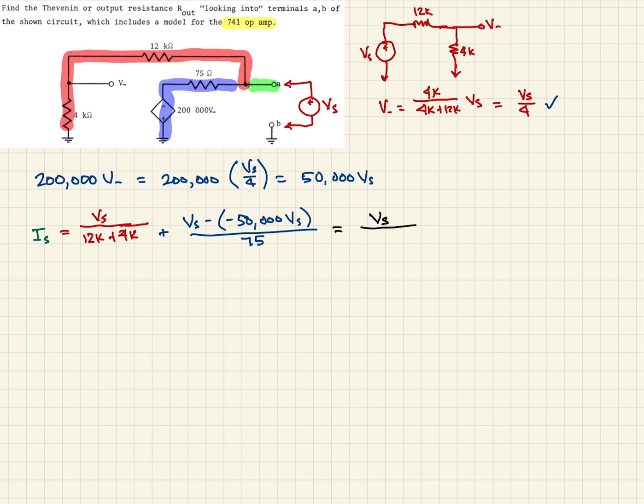So we'll have VS over 16,000 ohms. And that's going to be plus VS minus negative 50,000 VS. And that's all over 75 ohms. So it should be clear that VS over 16,000 compared to VS minus this 50,000 VS over 75, this is going to be negligent. So it's going to be approaching zero compared to the rest of the equation. So we can just disregard that.